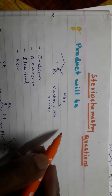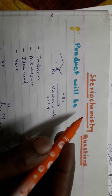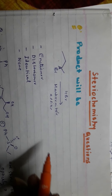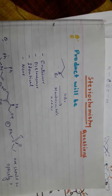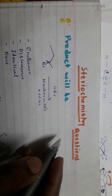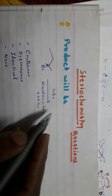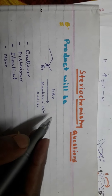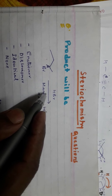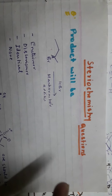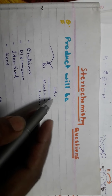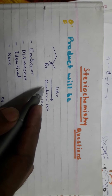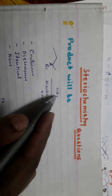Today we are going to discuss stereochemistry questions. This type of question you can find in CSIR and other great exams. We have selected some problems related to stereochemistry. The first question asks: what is the exact product from this starting material when you carry out Markovnikov addition?